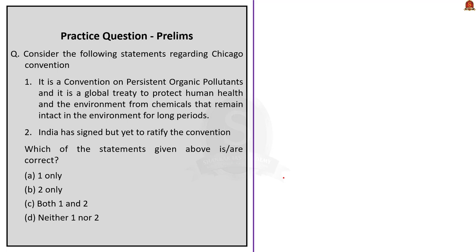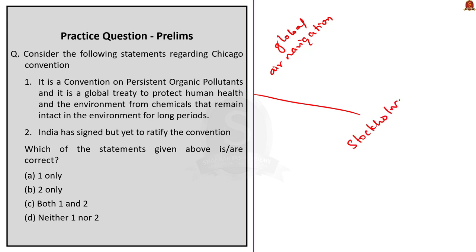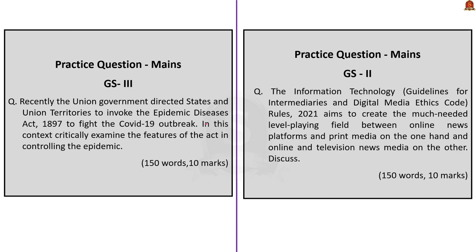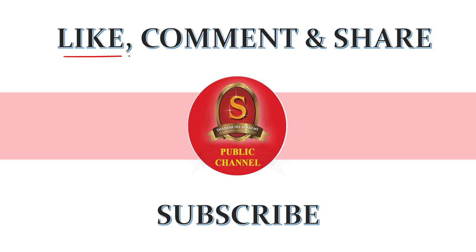Now let us move on to the third question. Consider the following statements regarding Chicago Convention. First statement: it is a convention on persistent organic pollutants and is a global treaty to protect human health and the environment from chemicals that remain intact in the environment for long periods. Second statement: India has signed but yet to ratify the convention. From our discussion, the Chicago Convention is about peaceful global air navigation — the Stockholm Convention is about persistent organic pollutants, not the Chicago Convention. So the first statement is incorrect. India has signed and ratified the Chicago Convention, so the second statement mentioning 'yet to ratify' is also incorrect. The answer is neither one nor two — both statements are wrong. Main practice questions are displayed here; you can write your answer and post in the comment section below. With this, we have come to the end of the news analysis. If you like the video, click like, comment and subscribe. Thank you.